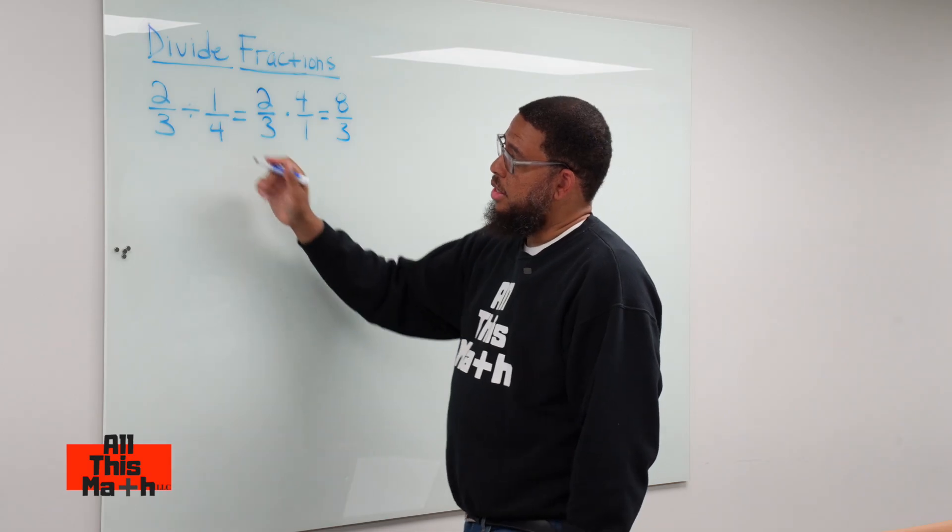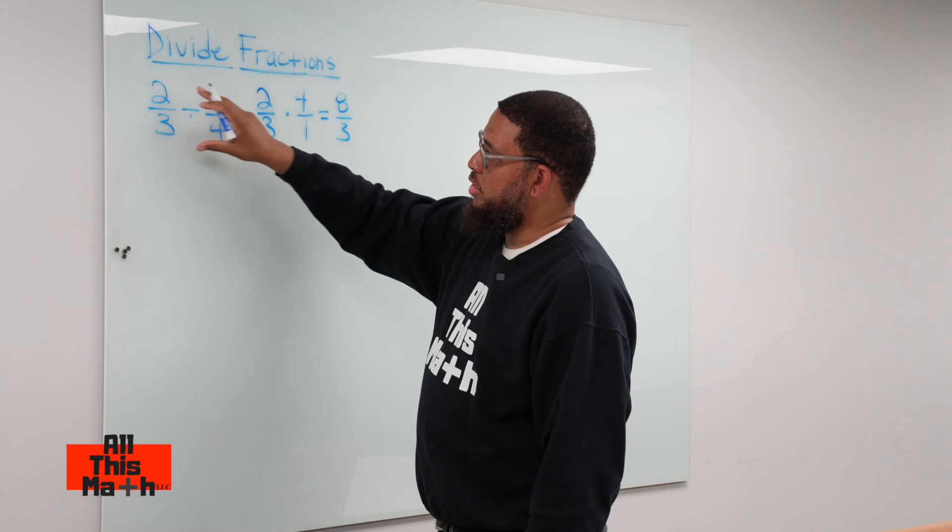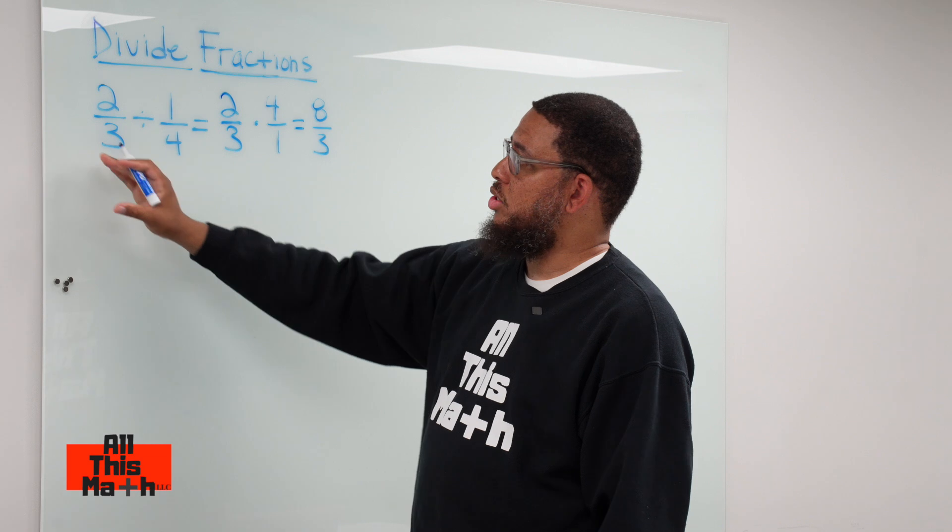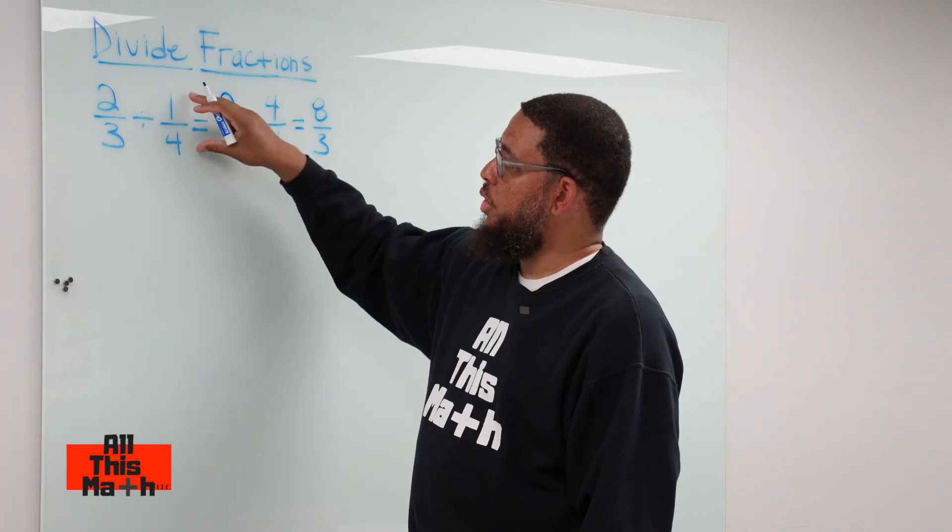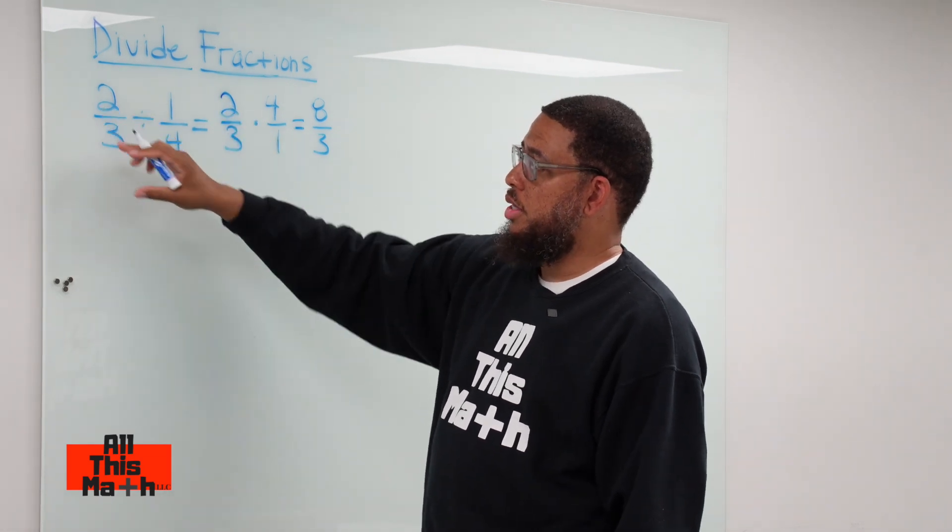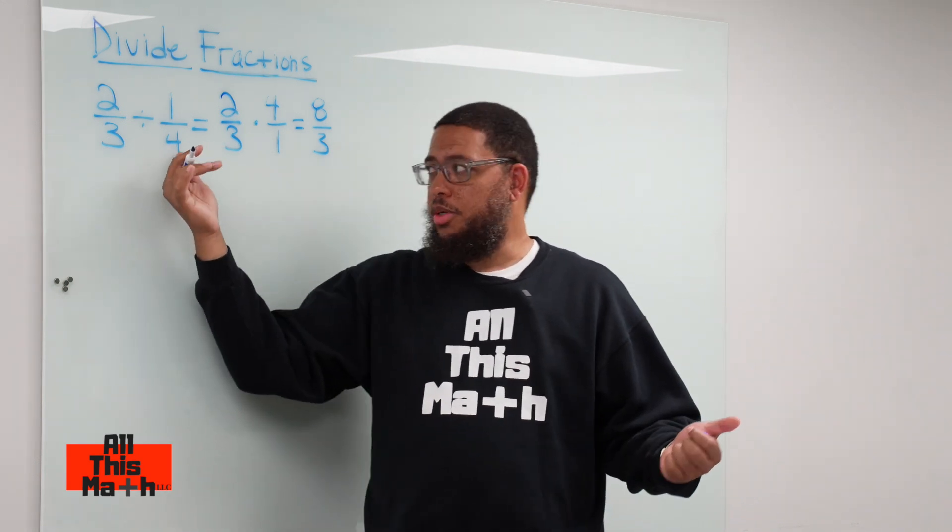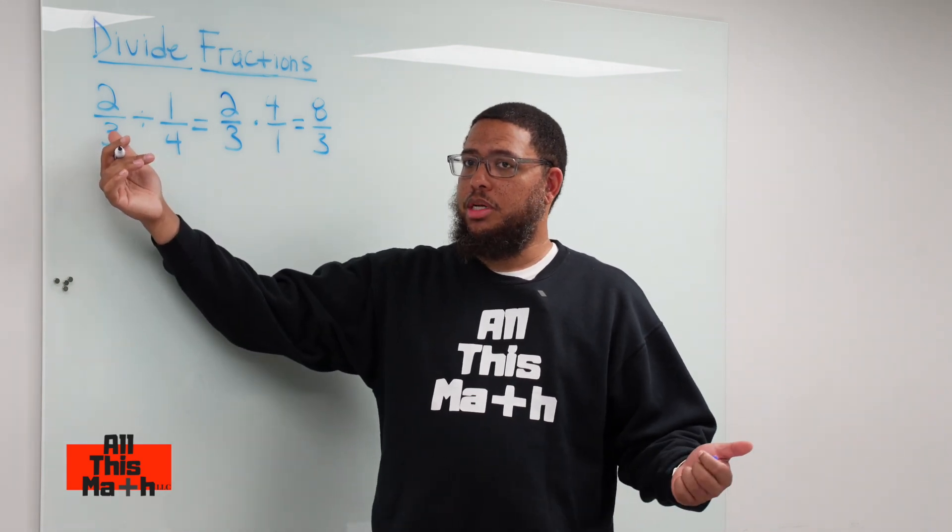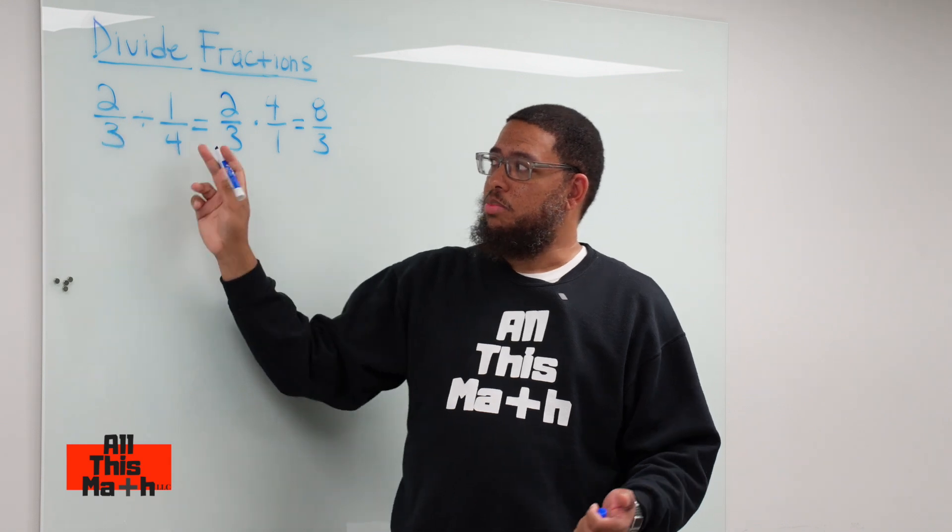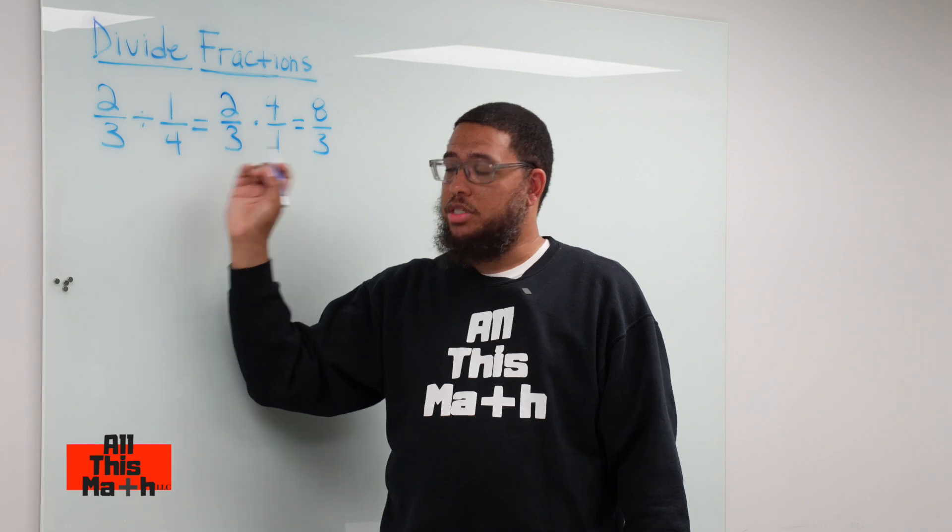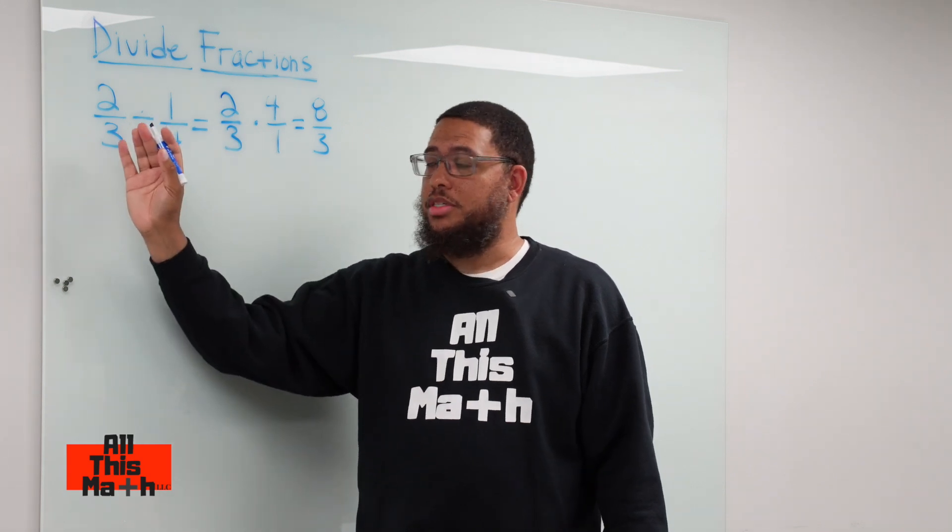So what that means is, two-thirds divided by one-fourth in the first place, what does that even mean? That means how many one-fourths can fit into two-thirds. And we know that one-fourth is less than two-thirds because if we thought of one-fourth as a decimal, one-fourth is like a quarter, like 25 cents. Two-thirds as money would be like 67 cents. So because 25 cents is less than 67 cents, you know that more than one of 25 cents can fit into 67 cents.